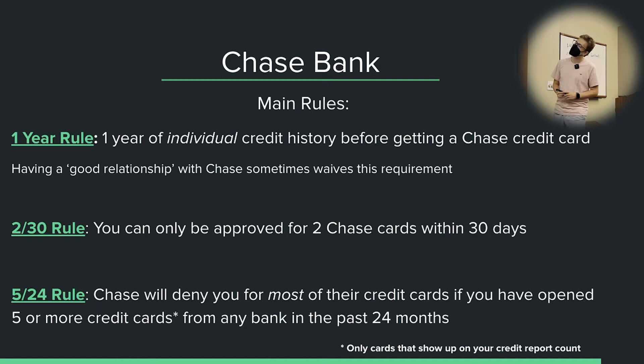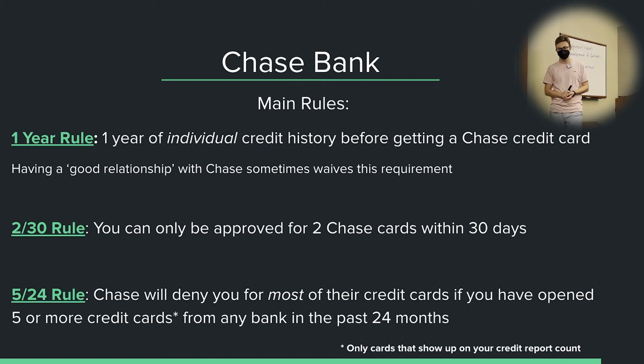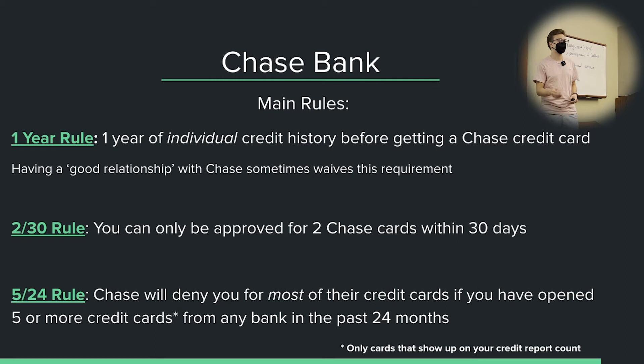I was approved for a Southwest card at 5/24, which normally would not have worked. Other people report being approved for the Amazon card at or above 5/24, and potentially the United card and some hotel cards. The cards that it still seems to be fully enforced for are the business Chase cards and any of the Chase-branded cards themselves — not a co-branded card like the Chase Hyatt or Chase IHG, but just the Chase Freedom or the Chase Sapphire.